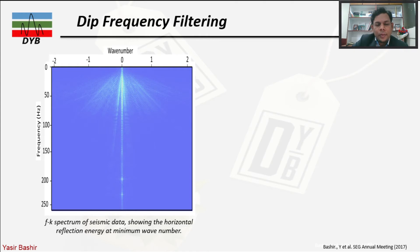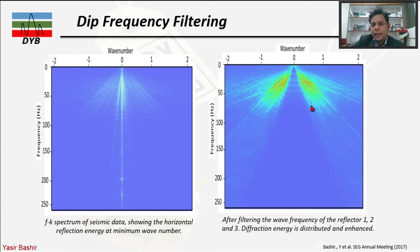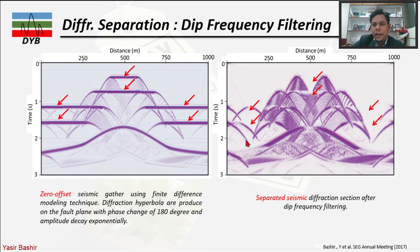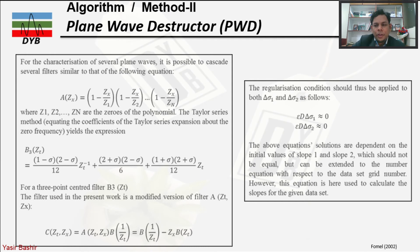After applying the Fourier transform, we observe the FK spectrum of the seismic data, which shows horizontal reflection energy at minimum wavenumber — this is the reflection energy near zero wavenumber, while everything else is diffraction. We then define a slope filter to remove this energy and recover the diffracted energy, then apply the inverse Fourier transform. In the input zero-offset data the red arrow highlights the reflector, but after filtering only the preserved diffractions remain.